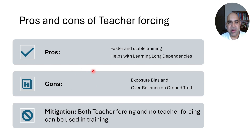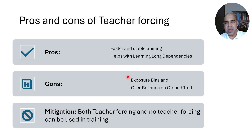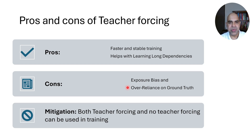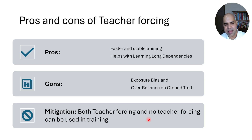There are disadvantages of teacher forcing as well. One major downside is exposure bias: during training the model always sees the correct input at each step, but during inference it has to rely on its own predictions as inputs. This discrepancy can cause the model to perform poorly during inference because it has never learned to recover from its own mistakes, leading to over-reliance on ground truth during training, which can become an issue during inference especially with noisy inputs. As a mitigation, both teacher forcing and no-teacher-forcing can be used during training — for one translation you use teacher forcing, and for the same translation you don't, so the decoder can learn from both correct and incorrect predictions.